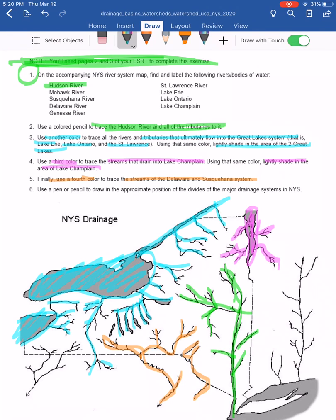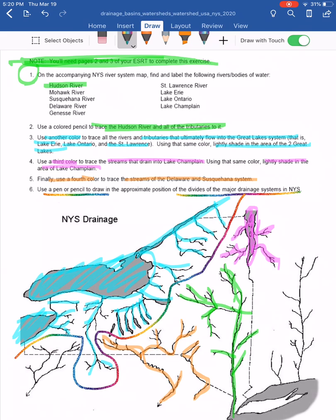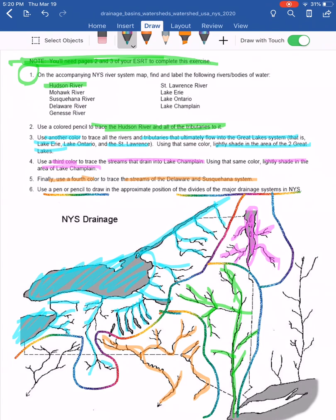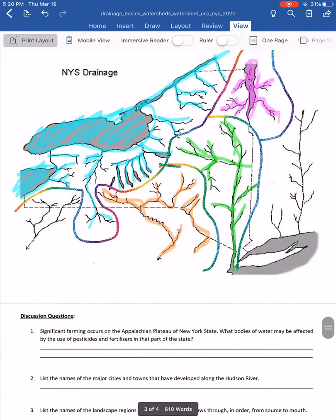The last task is to use a pen or pencil to draw the approximate position of the divides of the major drainage systems — separating each color from the others. Separate the blue from everything else, the orange, the green, and the pink areas. There you have your New York State drainage systems, watersheds, and divides.